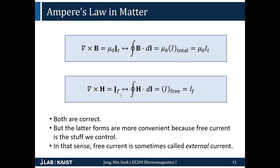So the equation curl H = J_f is in many cases more useful. But you can also use curl B = mu_0 * J with the free current density by simply replacing mu_0 with mu. Then these two equations become equivalent.